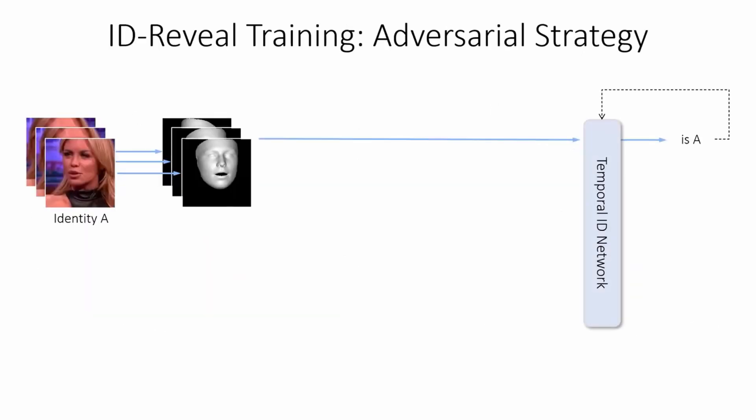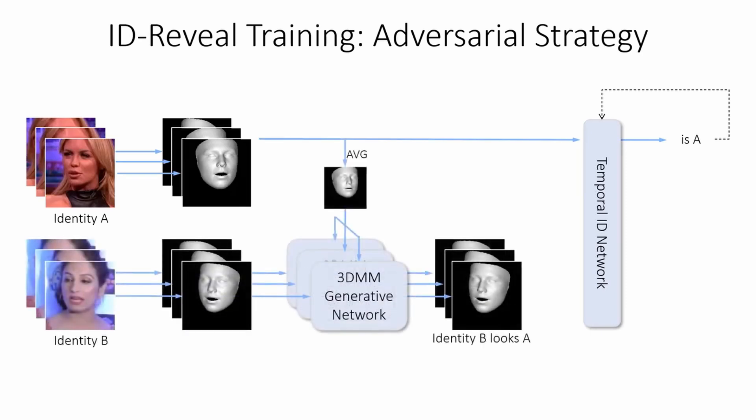For each frame, we use a 3D-morphable model to extract face features. Our temporal ID network maps these sequences into an embedding space, clustering them by identity using metric learning. In addition, we perform adversarial training by synthesizing these features. This incentivizes the network to rely mostly on temporal characteristics instead of only visual cues.